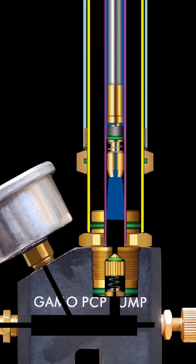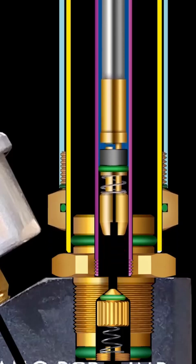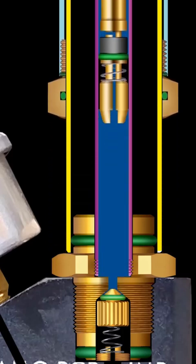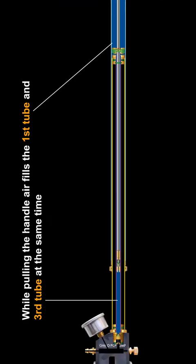It allows the air to go into the third tube. While pulling the handle, air fills the first tube and the third tube at the same time.